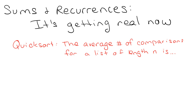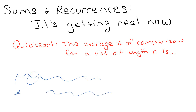We've been playing with sums and recurrences and we are actually doing some legit stuff now. You might be familiar with the quicksort algorithm, which is basically a way of sorting a list: you pick a random element, put anything less than it on one side and anything greater on the other side, then recursively sort the two remaining lists using quicksort.